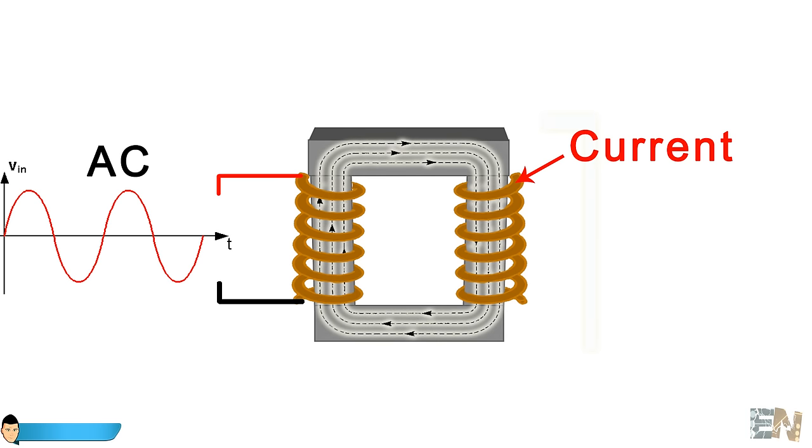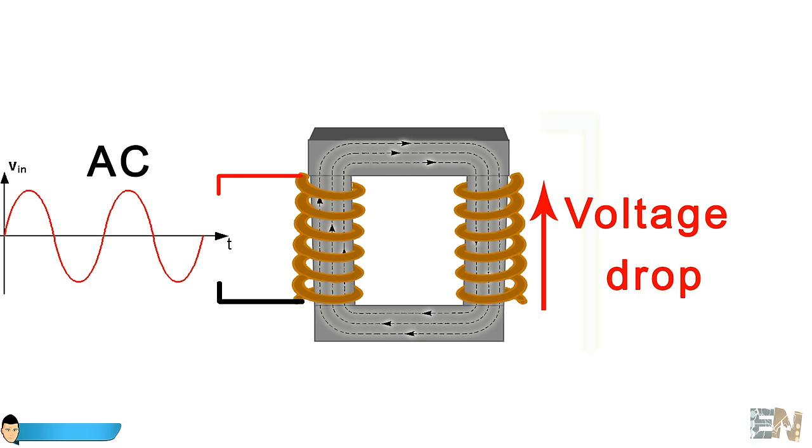So the same variation of magnetic field that the first coil creates will induce a current in the secondary coil. This current will be equal to a voltage drop. So in order to create a magnetic flux variation, we need an oscillating AC voltage. It doesn't have to be a sine wave. It could be also a square wave.